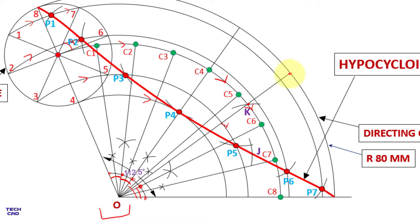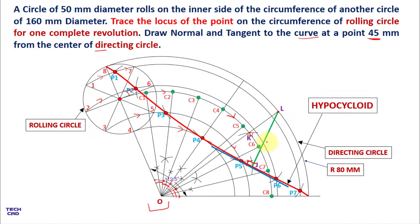Draw a line from the center of the directing circle through point K, extending it to the directing circle; name this point L. Draw a line from L to J — this is the normal to the curve. To draw the tangent, draw a line perpendicular to the normal at J. This completes the normal and tangent to the hypocycloid. I hope you understand — if you have any queries, comment below. Thanks for watching, be happy.